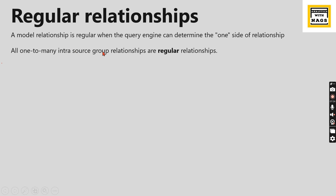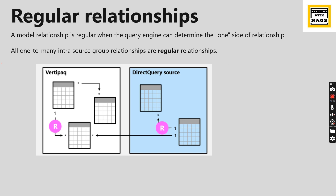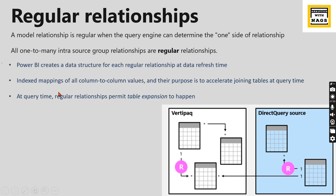A model relationship is regular when the query engine can determine one side of the relationship. All one-to-many intra source group relationships are regular. In the example, within VertiPaq this is a regular relationship, and within DirectQuery this is also a regular relationship. The advantage: Power BI creates a data structure for each regular relationship at data refresh time — index and column-to-column mapping are created — enabling query performance at query time. Regular relationships also permit table expansion.